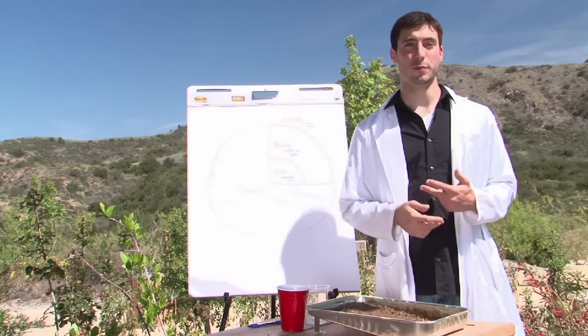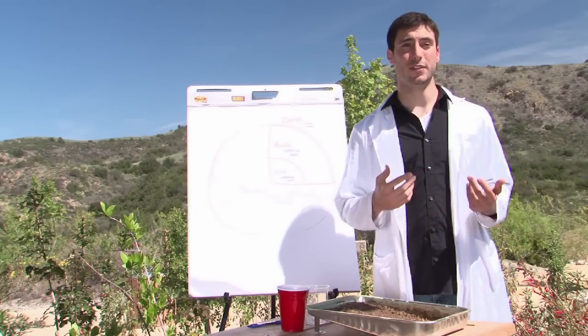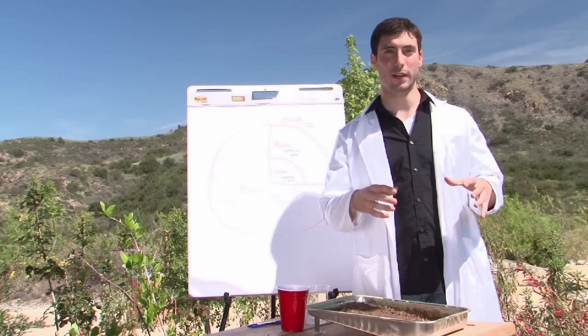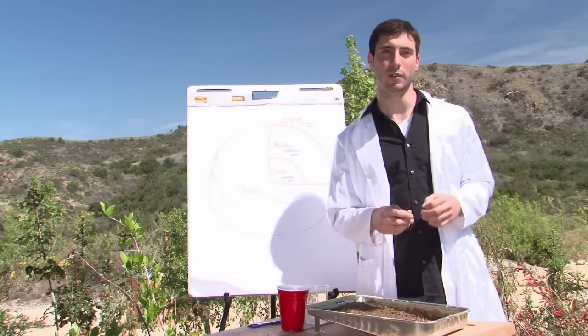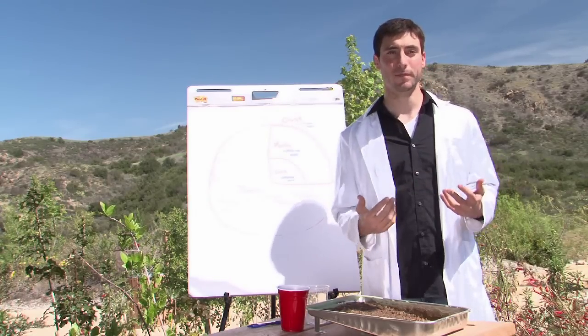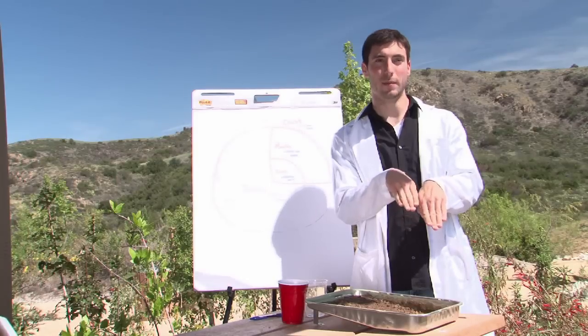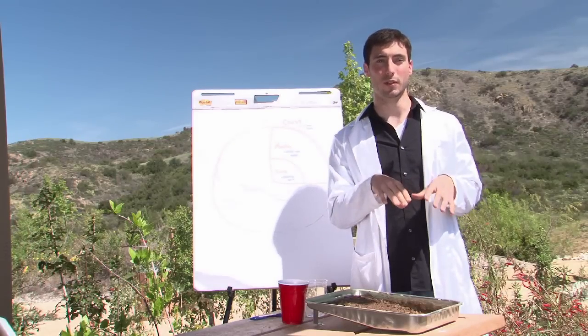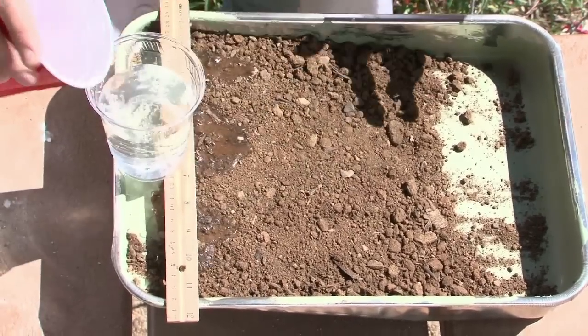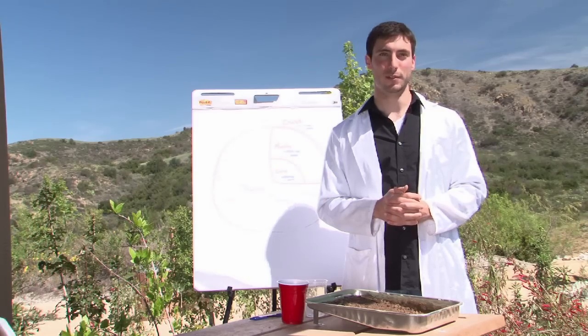Some other good geophysical classroom experiments are the baking soda and vinegar volcano, where you make a paper mache volcano, put a little souffle cup of baking soda in there, and pour in some vinegar with red food coloring and it will erupt. You can also demonstrate plate boundaries by moving pieces of paper back and forth with soil or sediment on top of them. The erosion table is just one of many classroom experiments you can do on geophysical properties.